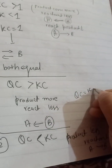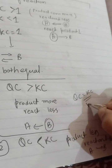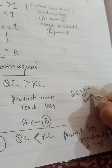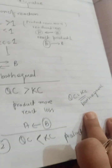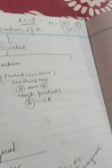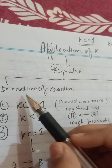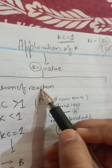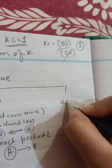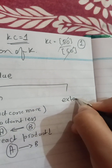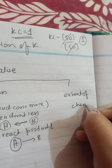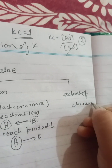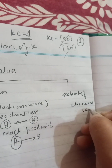If Qc is equal to Kc, both concentrations are equal, which means the system is at equilibrium state. It also depends upon the extent or limit of the chemical reaction.